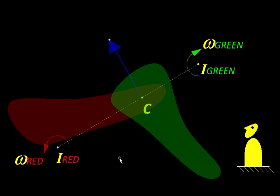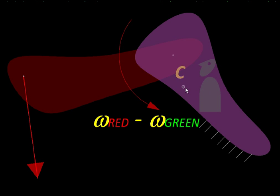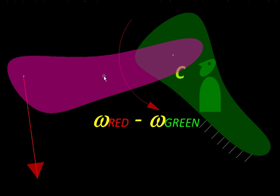Now if we place ourselves on say the green body, it will appear stationary, and so the velocity of point C on it will become zero. And therefore the velocity of the coincident point C on the red body would also become zero.